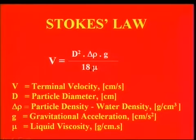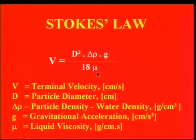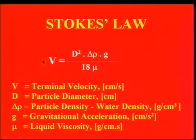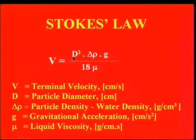Delta rho is the density difference between the particle and the water. G is the gravitational force, and mu is the viscosity of the water. We are interested in increasing the settling velocity — or terminal velocity — of the particle by increasing the particle diameter, density difference, gravitational force, or decreasing the viscosity.